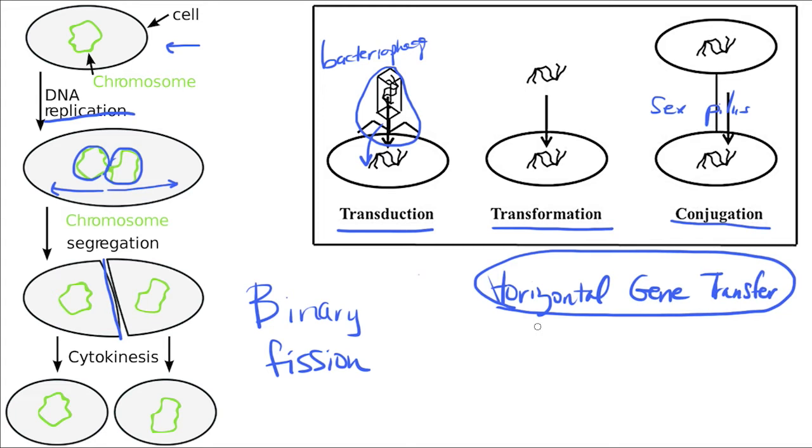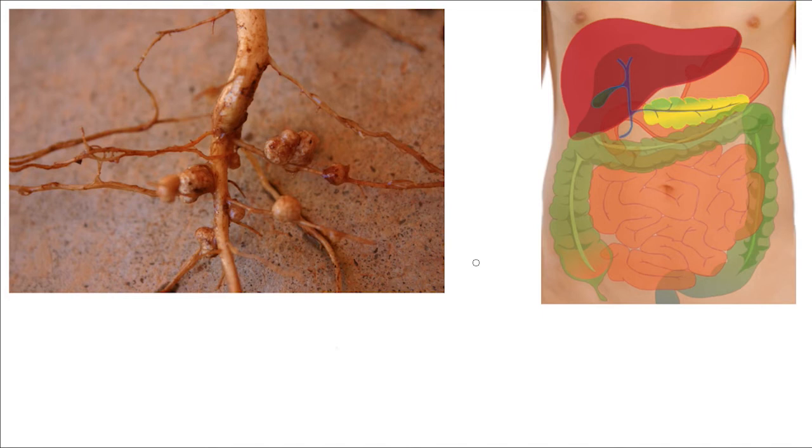Let's switch gears a little bit and talk about what are some positive influences that prokaryotic cells have on Earth. Essentially, without prokaryotic cells, none of us would be able to live or survive. They are an absolutely essential component to all ecosystems.